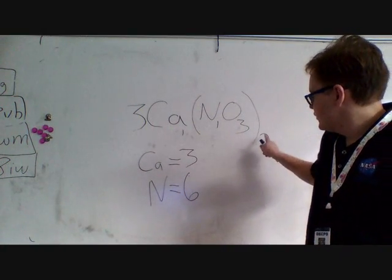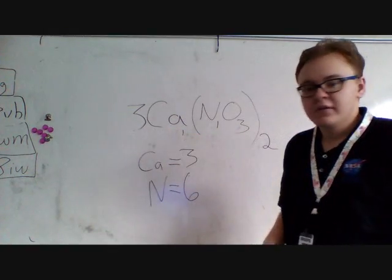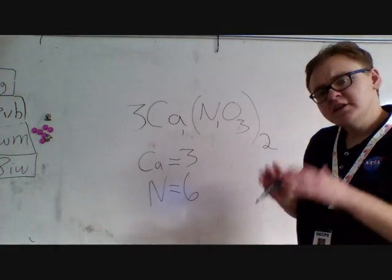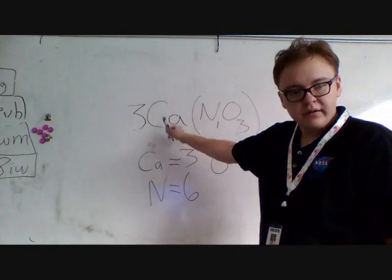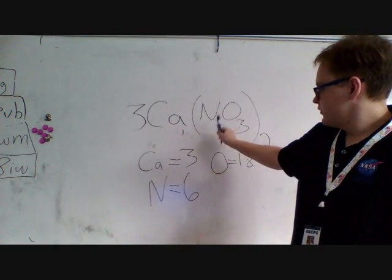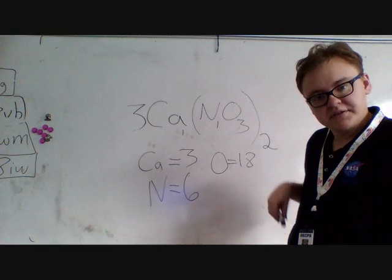What about O? 2 times 3 times 3. 9 times 2, 18. So we have 3 calcium, 6 nitrogen, and 18 oxygens.